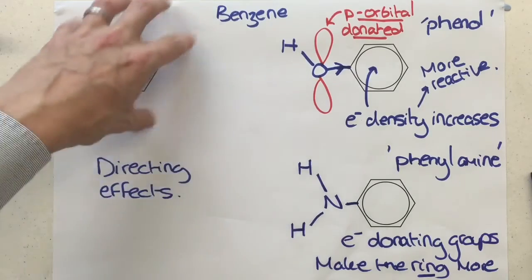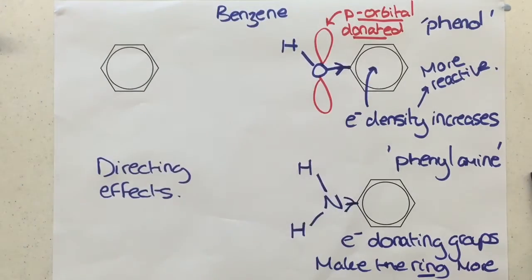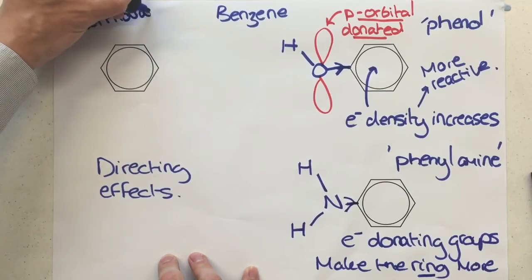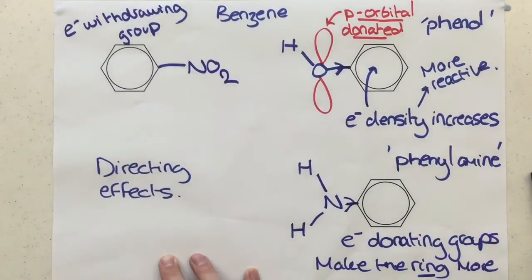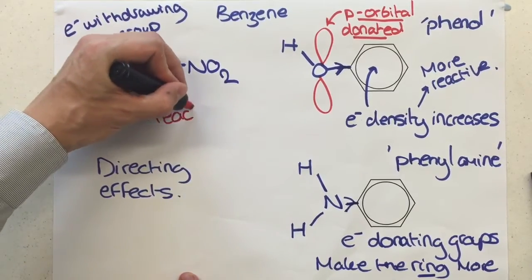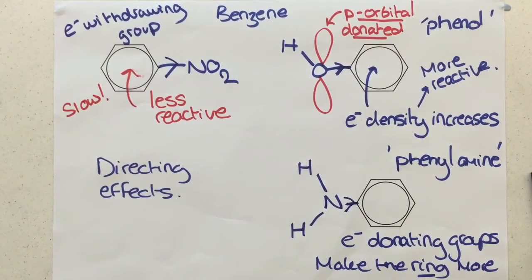So, what about the opposite? What about something that pulls electron density away? These two push in. What about something that is an electron withdrawing group? Well, an example of an electron withdrawing group is an NO2, a nitro group. And you actually know how to add that onto the molecule right at the start of the benzene topic, so it's worth making sure you understand that. Now, what's happening here is the electrons are actually being withdrawn from the benzene ring. And, as you might expect, that is going to make it less, specifically the ring part, less reactive. Less able to induce a dipole. Very, very slow reactions now.